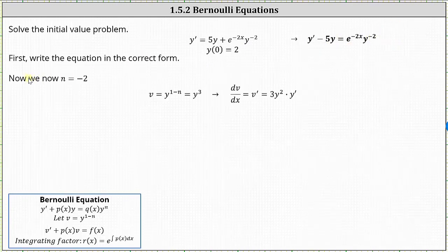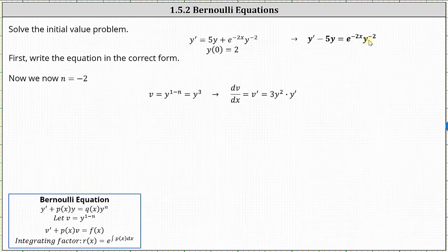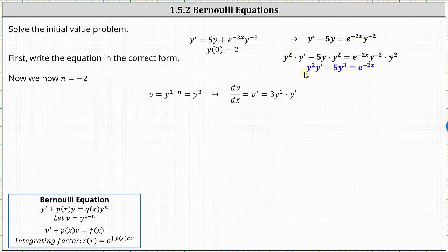So if n is equal to negative 2, we know our substitution is going to be v equals y to the power of one minus negative 2, which gives us v equals y cubed. Remember we can also identify y cubed by dividing both sides of the equation by y to the power of negative 2, or multiplying by y squared. Let's go ahead and multiply both sides by y squared. Notice this gives us y squared y prime minus 5y cubed equals e to the power of negative 2x.